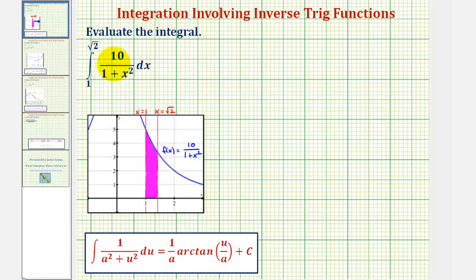To evaluate this, let's begin by factoring out the 10. So we can write this as 10 times the integral of one divided by one plus x squared, integrated with respect to x, from one to square root two.